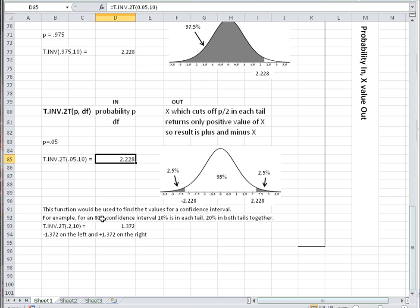For example, for an 80% confidence interval, 10% is in each tail, 20% in both tails together. So the specification is 0.2, 20%, with the degrees of freedom of 10, and the result is 1.372.